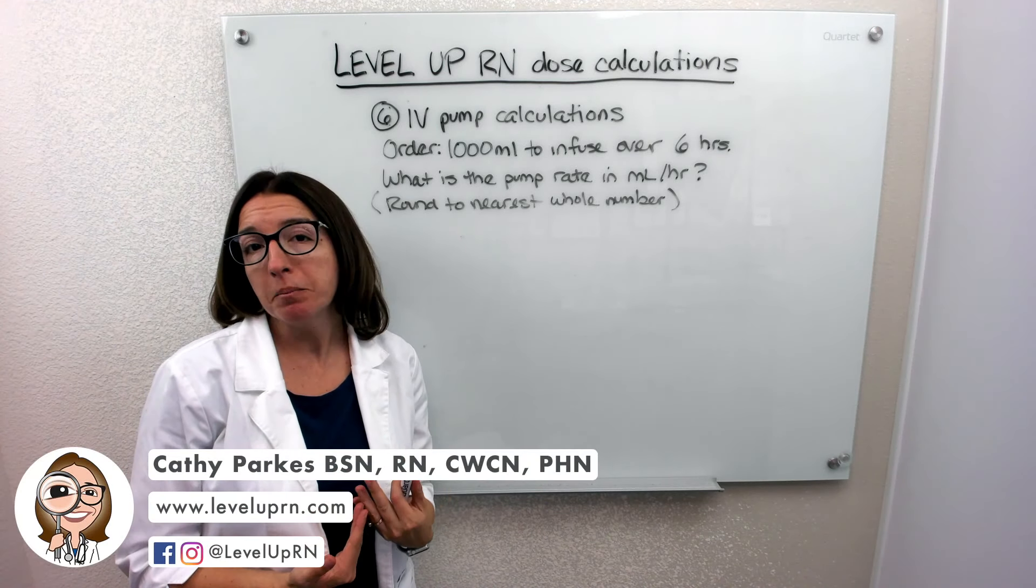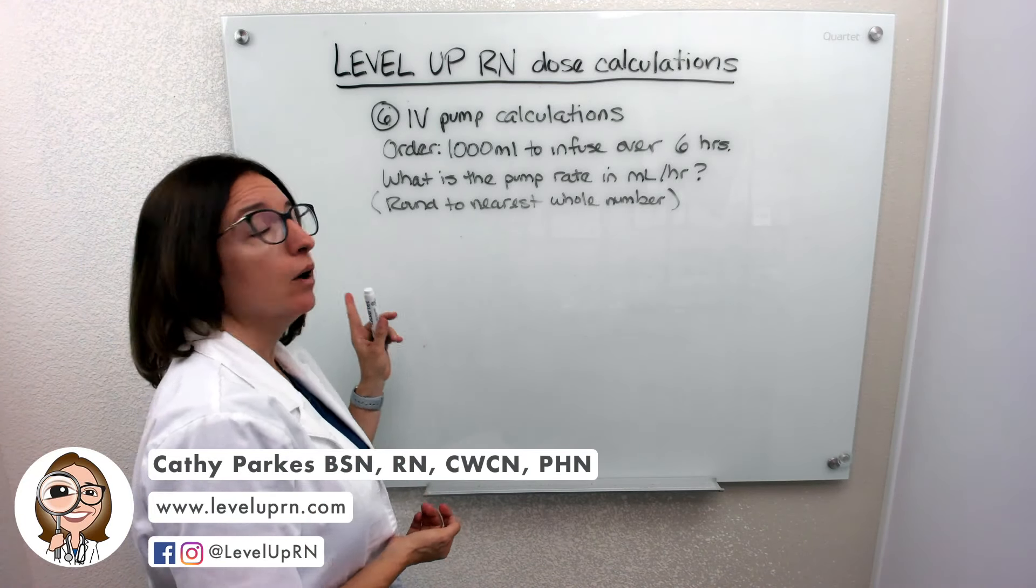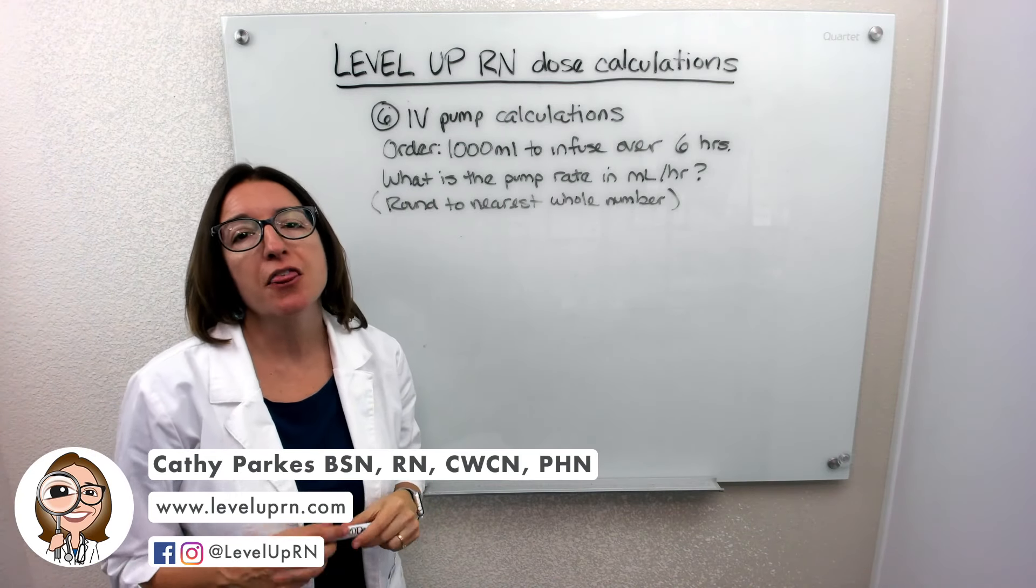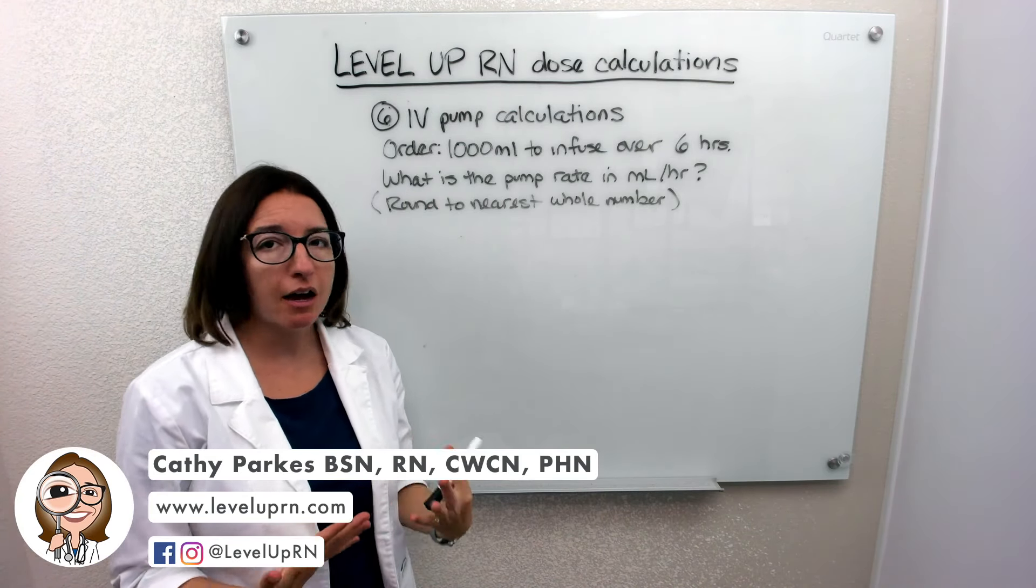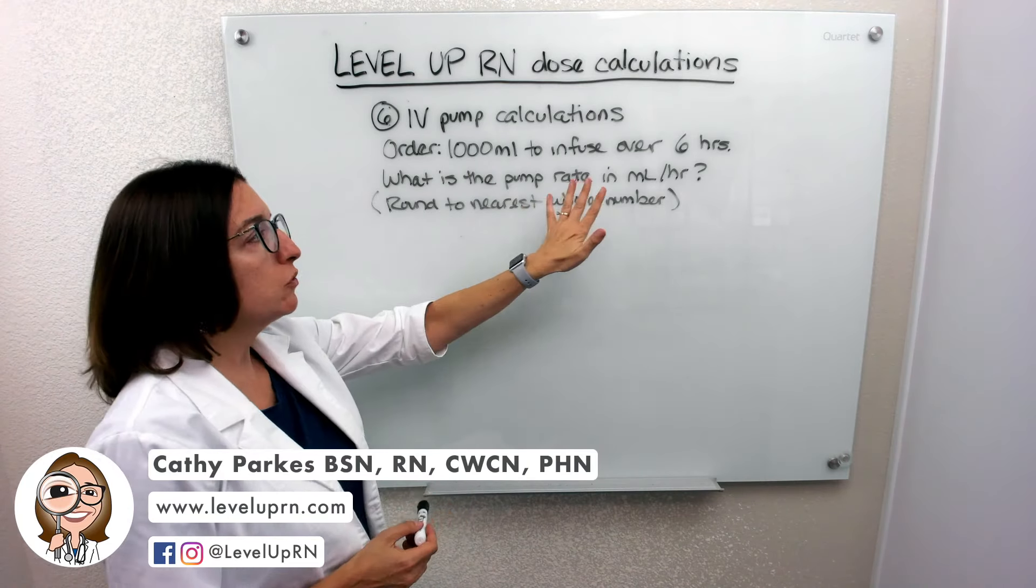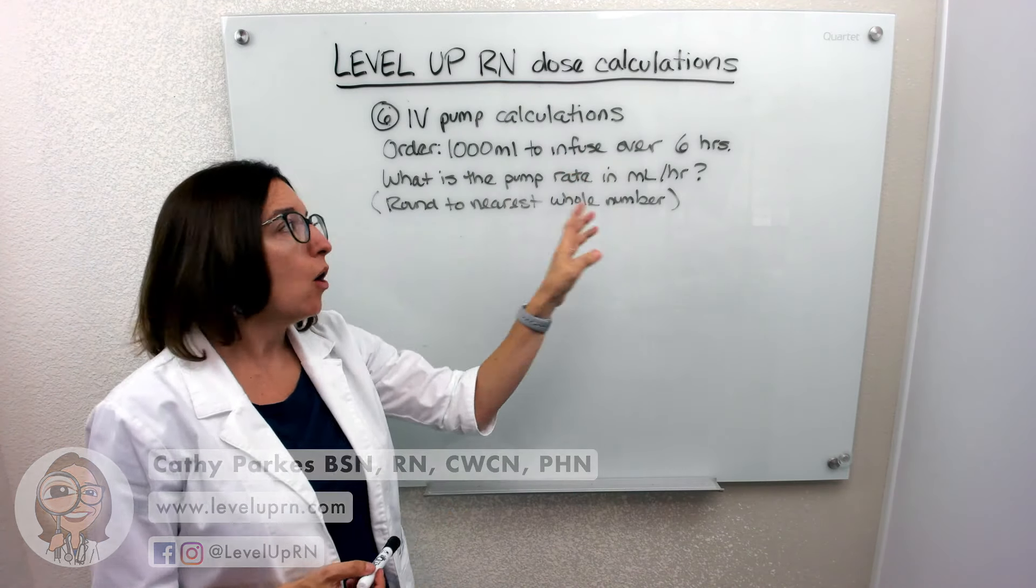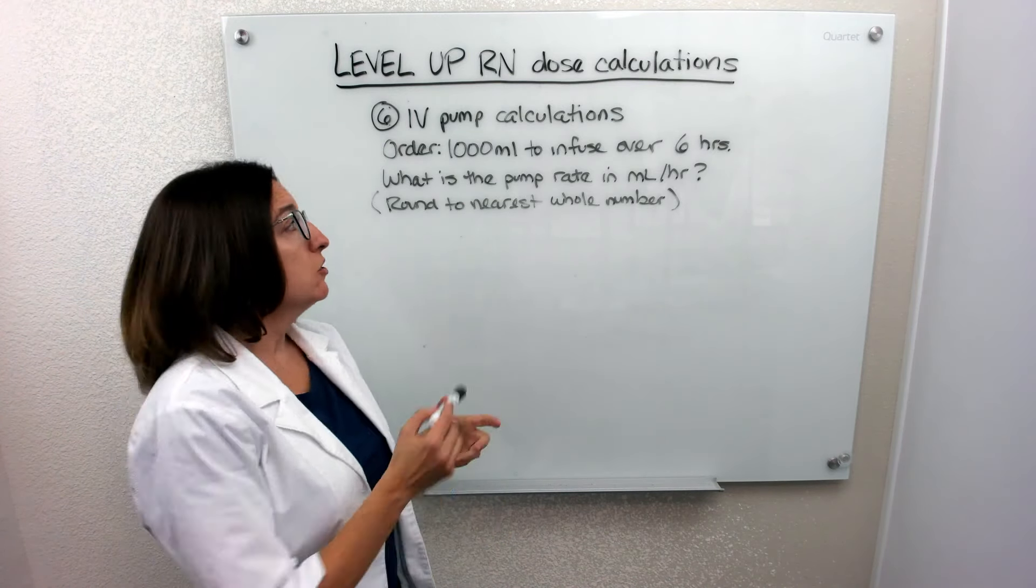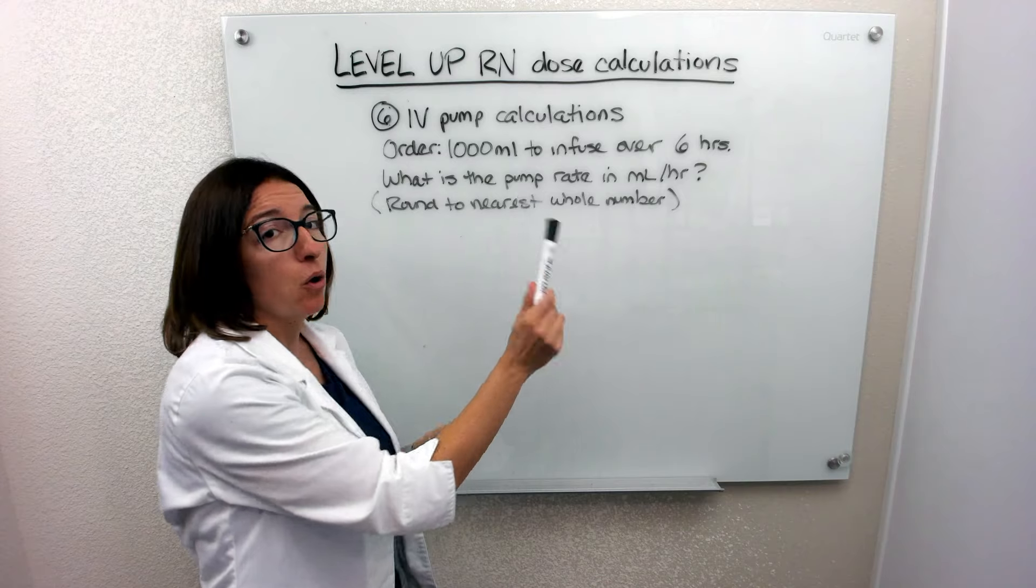All right, I'm going to go over some IV pump calculations now. So number six has an order for a thousand milliliters of some kind of IV fluid to infuse over six hours. What is the pump rate in milliliters per hour? And we want to round to the nearest whole number.